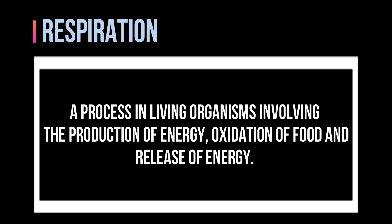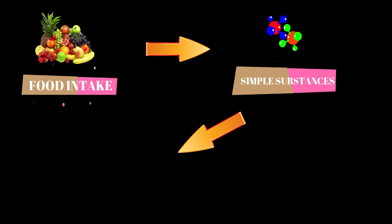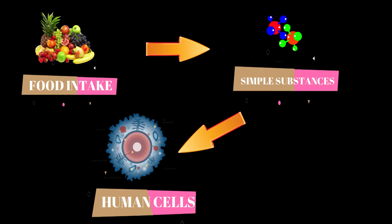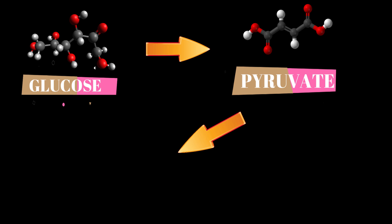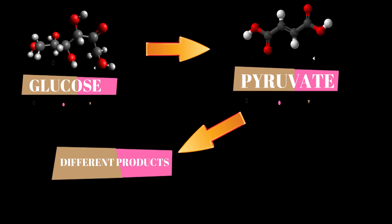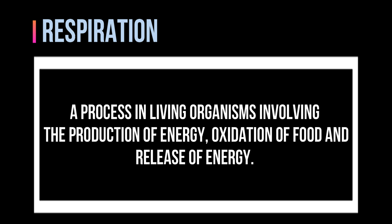In respiration, the food converted into simple substances is raised to each and every cell. Here in the cell, the simple glucose first converts into pyruvate, and this pyruvate then further converts into different products according to the type of respiration. So once again: respiration is a process by which a living organism utilizes food to get energy.